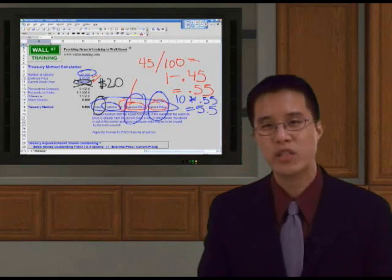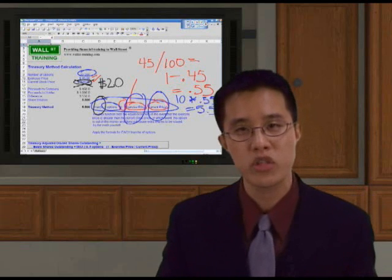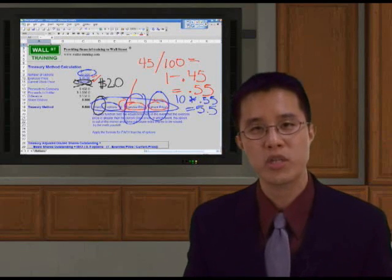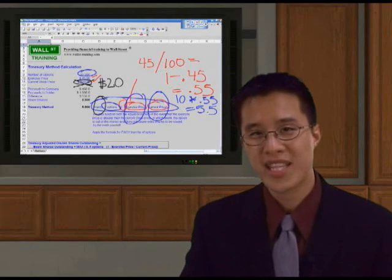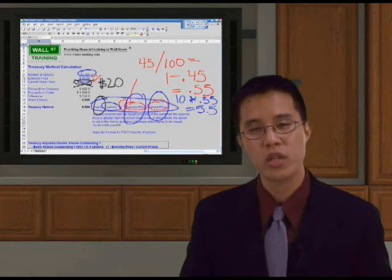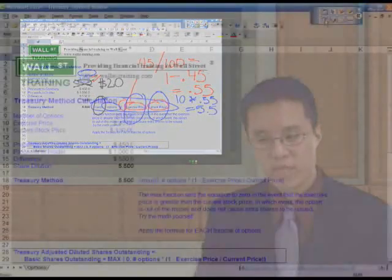Which simply means that these options are out of the money. If they're out of the money, they do not cause any share dilution because there's no additional shares being issued. So, again, no additional shares being issued if it's out of the money, no share dilution. So how does this max zero take care of that?